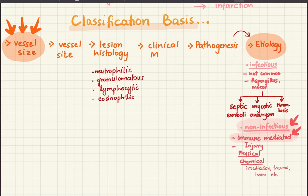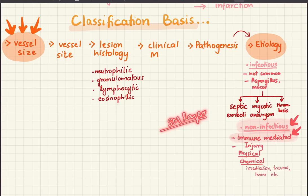On the basis of etiology, vasculitides can be infectious or non-infectious. Infectious causes — bacterial, fungal, or viral — are not that common. Two important fungi responsible are Aspergillus and Mucor. These result in septic thrombi and emboli, and mycotic aneurysms — the vessel wall is still inflamed, the smooth muscle layer undergoes necrosis, weakening the vessel wall and resulting in abnormal vessel dilatation.